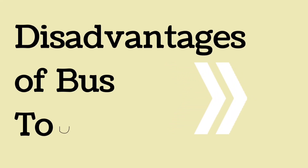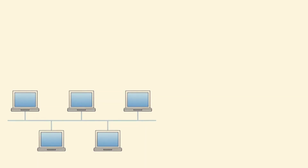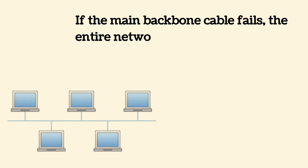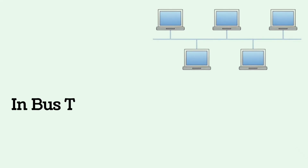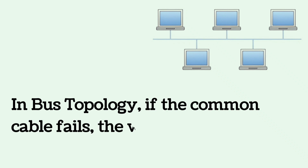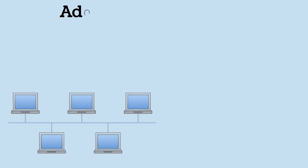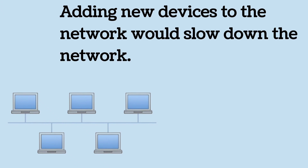Disadvantages of bus topology: if the main backbone cable fails, the entire network will be disrupted and stop functioning. If the common cable fails, the whole system crashes. Additionally, adding new devices to the network would slow it down.